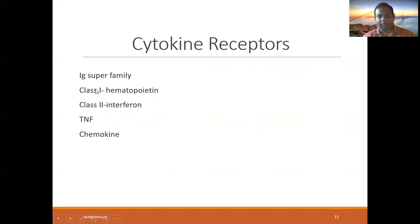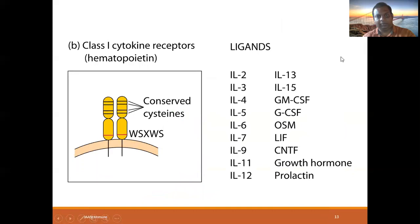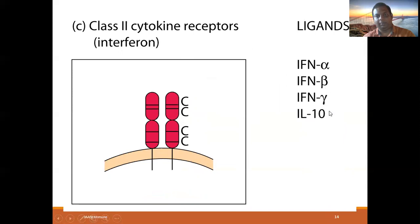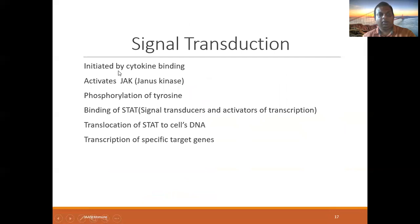Cytokine receptors belong to the immunoglobulin superfamily. There are receptor families: Class 1 cytokine receptors have specific ligands. Class 2 includes receptors for interferon-alpha, beta, and gamma. These are multimeric receptors with common signal transduction subunits.